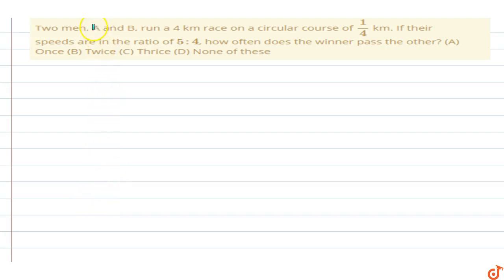In this question, two men A and B run a 4 km race on a circular course of 1/4 km. If their speeds are in ratio 5 to 4, how often does the winner pass the other?